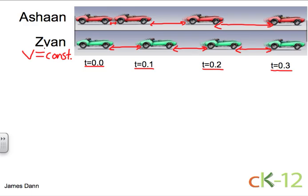This increase in distance covered indicates that Ashaan is speeding up, which indicates that he has acceleration and acceleration greater than zero.